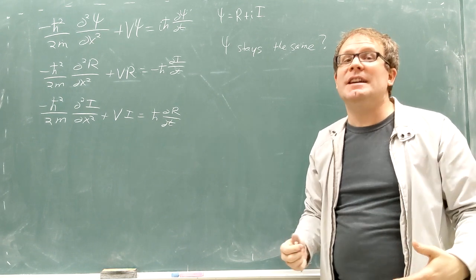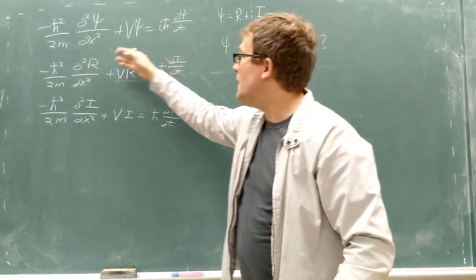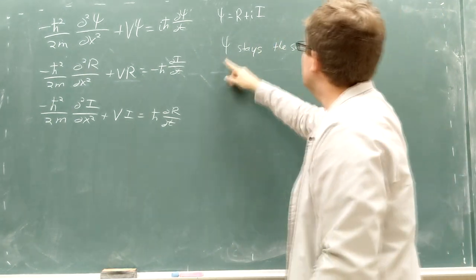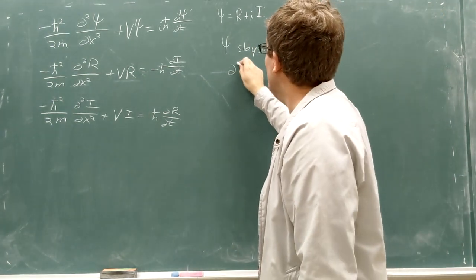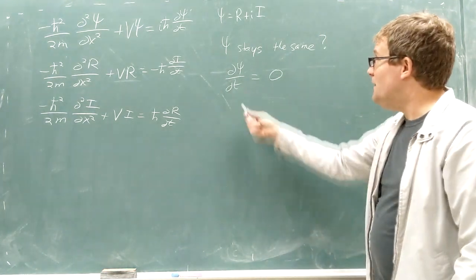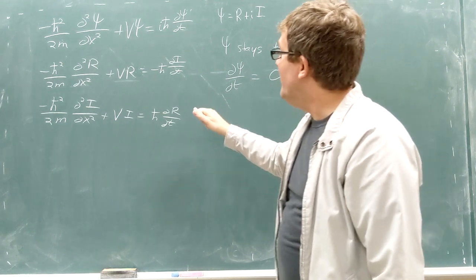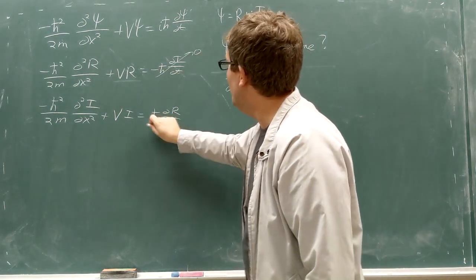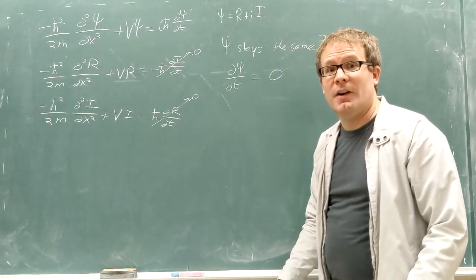And unfortunately the answer is no, precisely because of this exchange going on. Because if you had psi staying the same, that would mean that d psi dt would equal zero. If decided to equal zero, then that means that this part right here has equal zero and this part right here has equal zero.